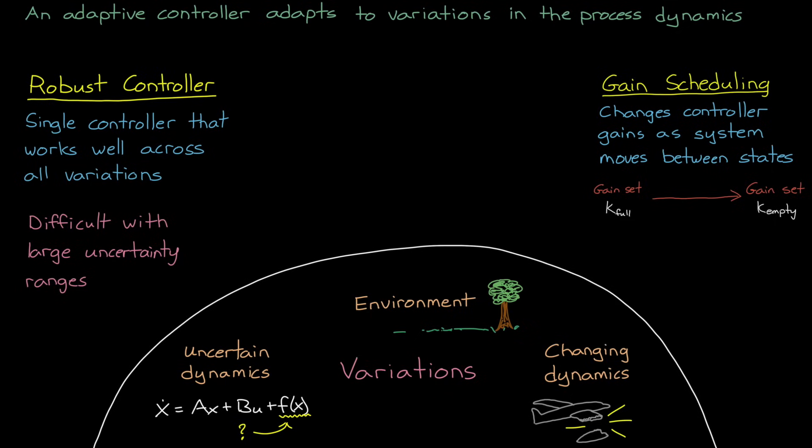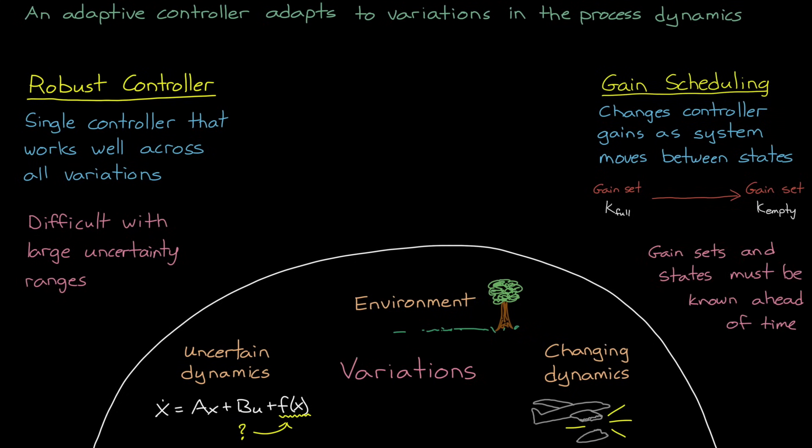So for the cases with large variation, you may consider some other method, like gain scheduling that will change the gains of the controller as the system moves from one state to another. And this works well for variations, even large variations, but that you are expecting.